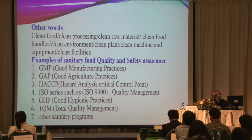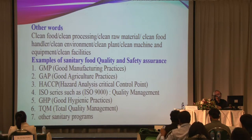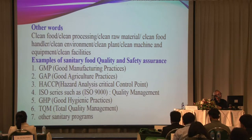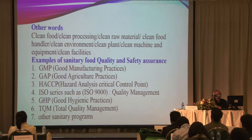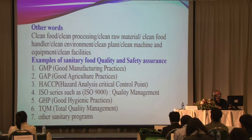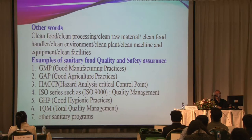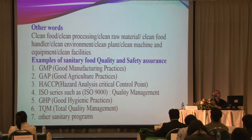Examples of sanitary food quality and safety assurance programs include: GMP — good manufacturing practice; GAP — good agricultural practice; HACCP — hazard analysis critical control point; ISO series such as ISO 9000, a kind of quality management; GHP — good hygienic practices; TQM — total quality management. Everything operates under these systems, along with other sanitary programs applicable to the food industry.